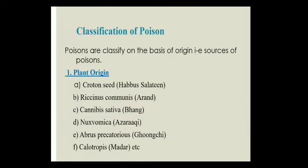Now let's talk about the classification of poison — how poison is classified and categorized. The classification of poison has been done on the basis of its origin, its source. Just as you have studied in Advia Mufradat — mooladi thalatha — that medicines have three origins: plant origin, mineral origin, and animal origin — similarly, poison is also classified the same way. There are three origins: plant origin poison, mineral origin, and animal origin.